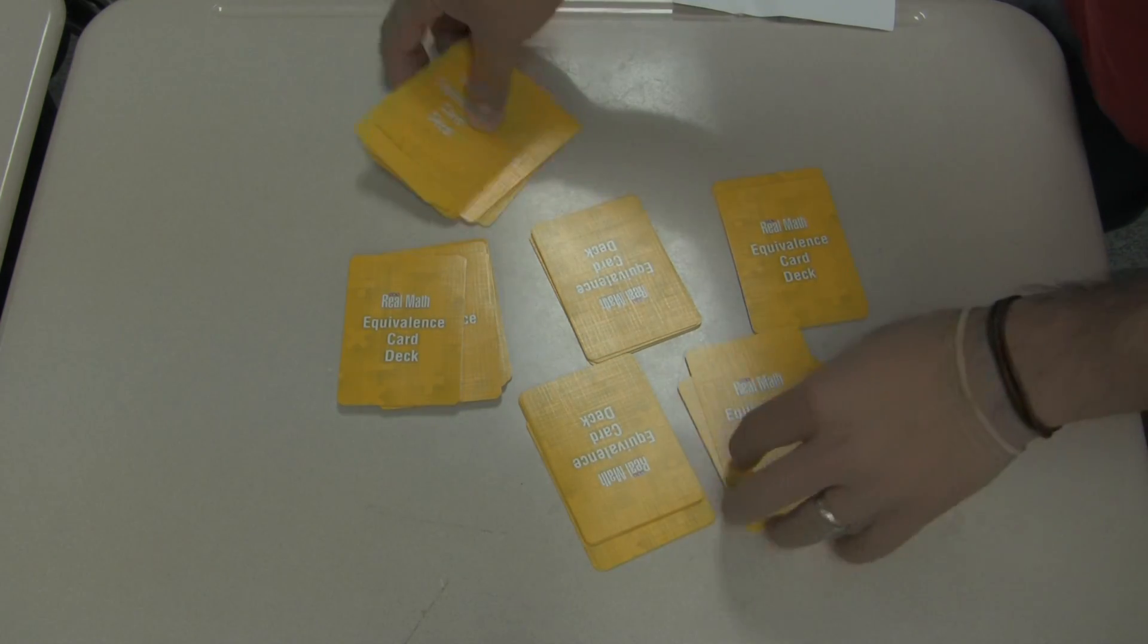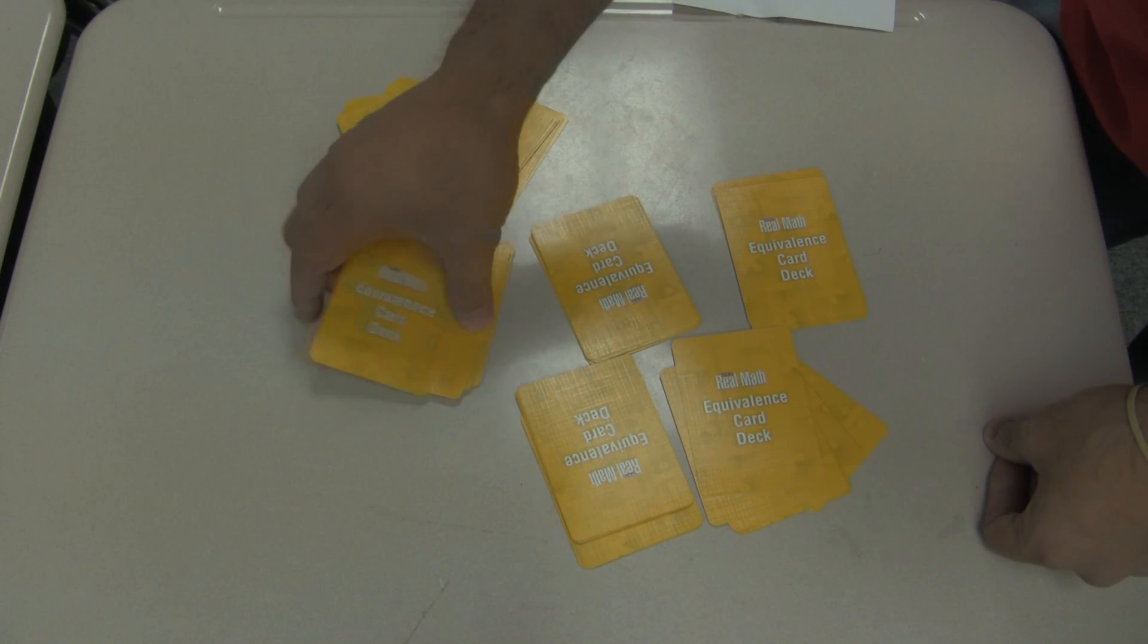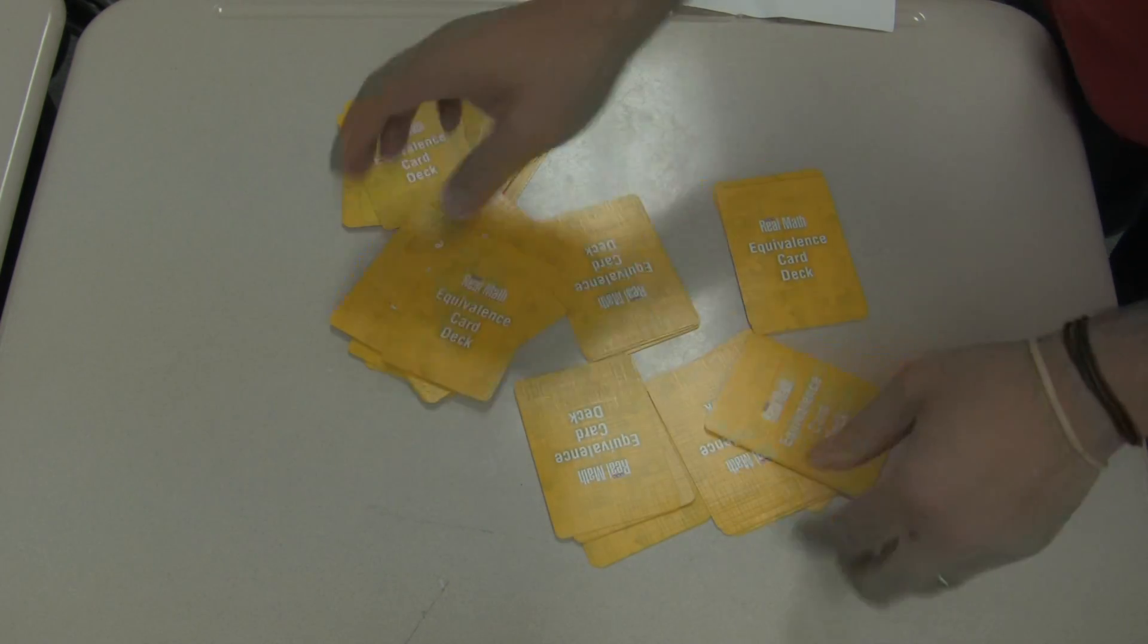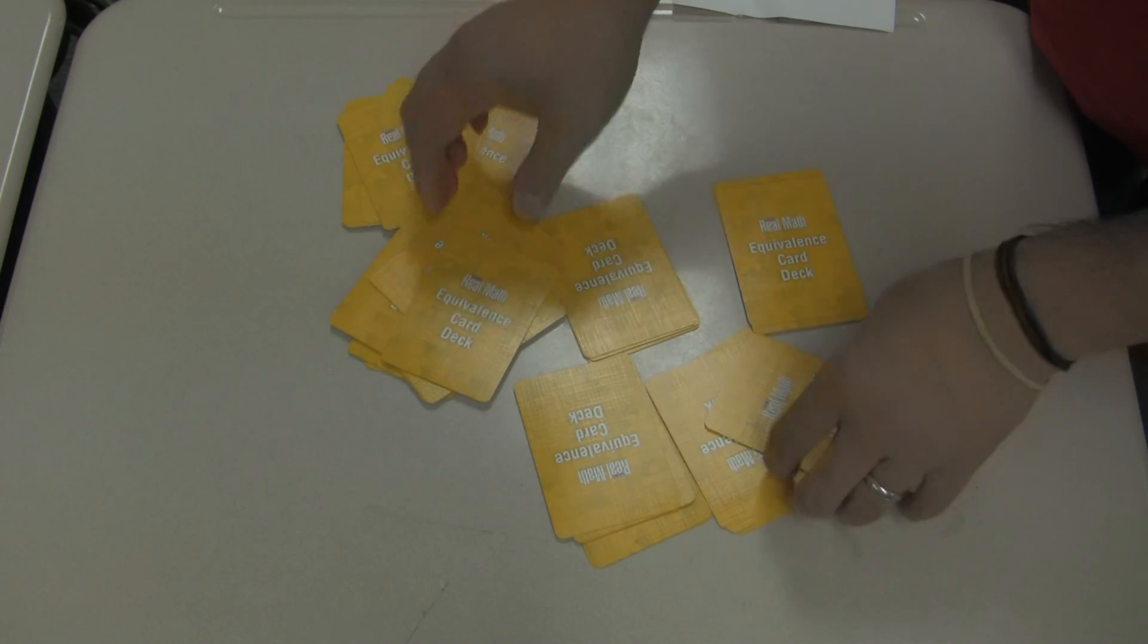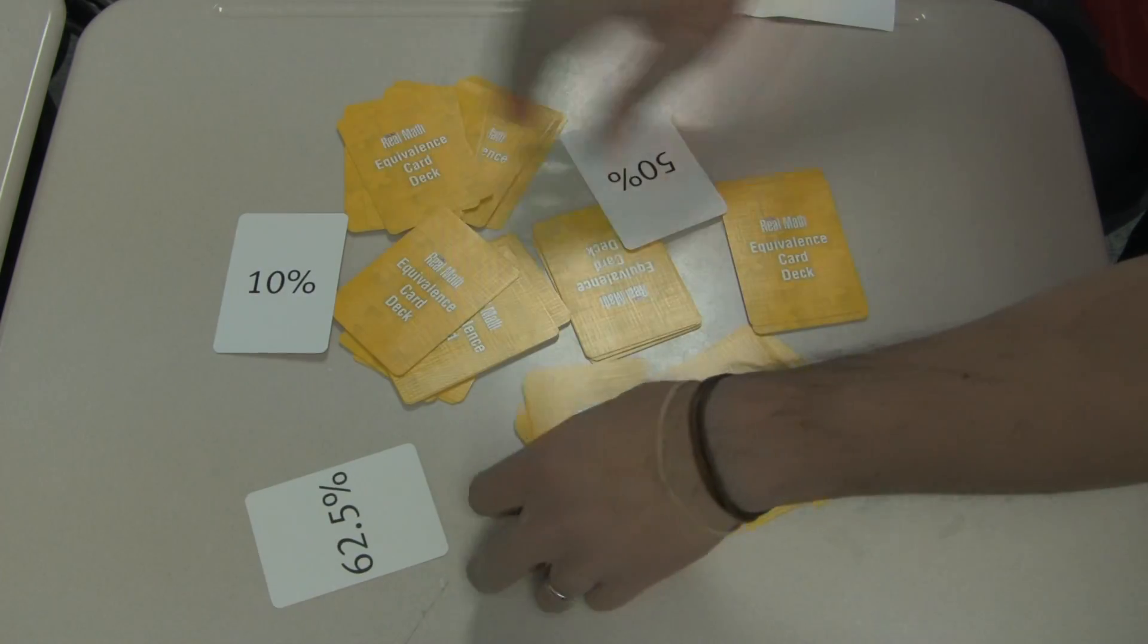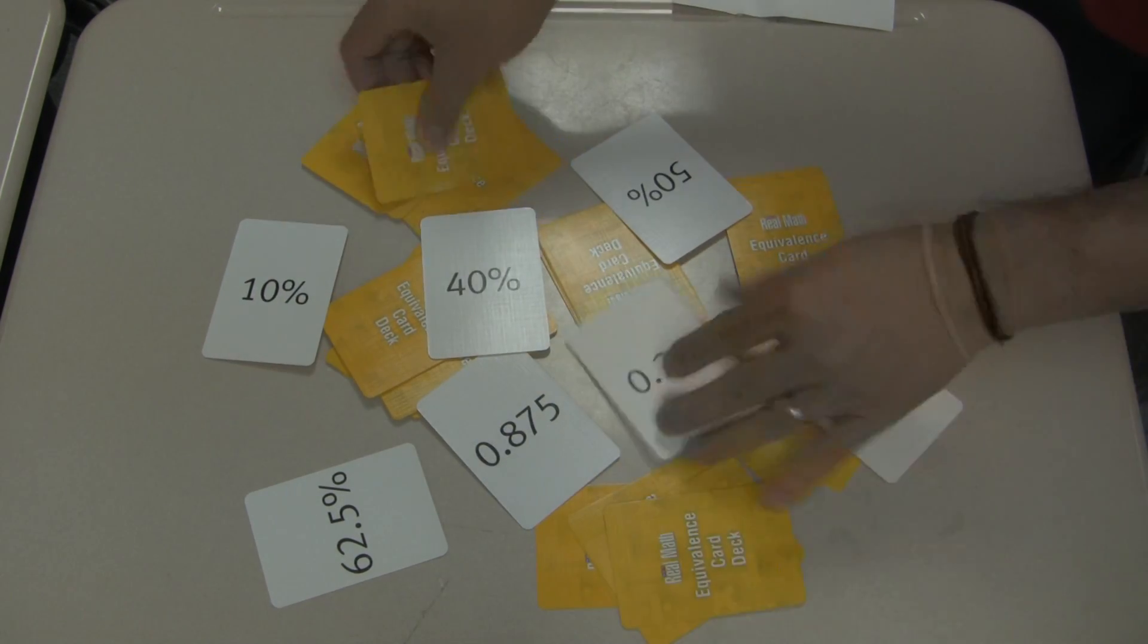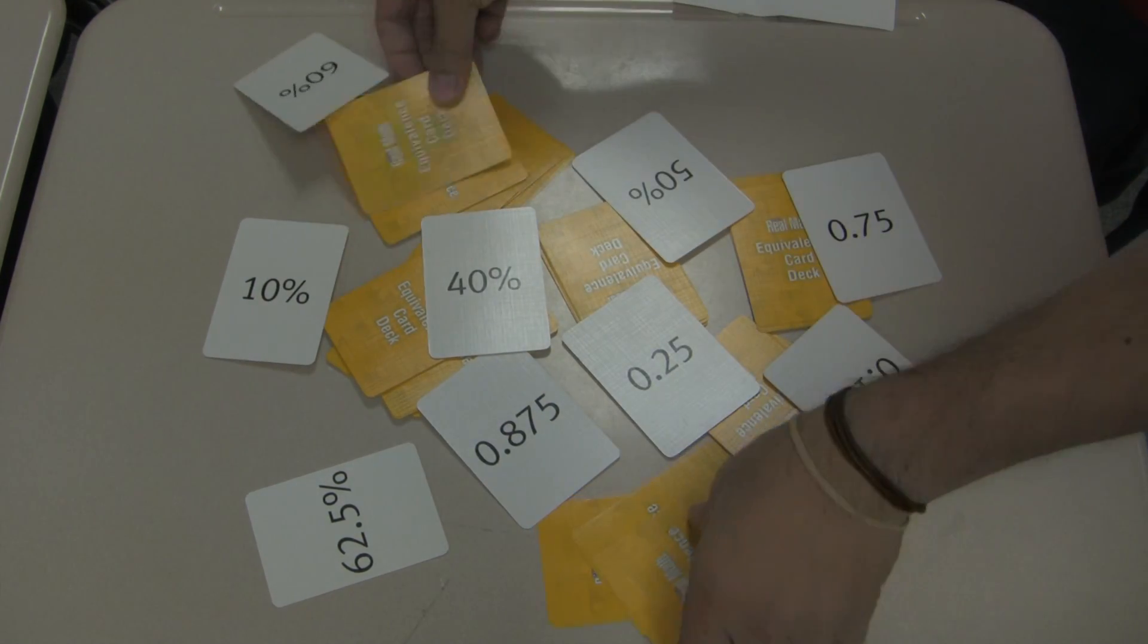You take one deck of these fraction cards that actually have decimals and percentages as well, and you just start flipping them. Everybody, whoever you've got, maybe four players, they all start flipping cards. Everyone's just flipping cards, and then as you're flipping cards, you just try to find one.